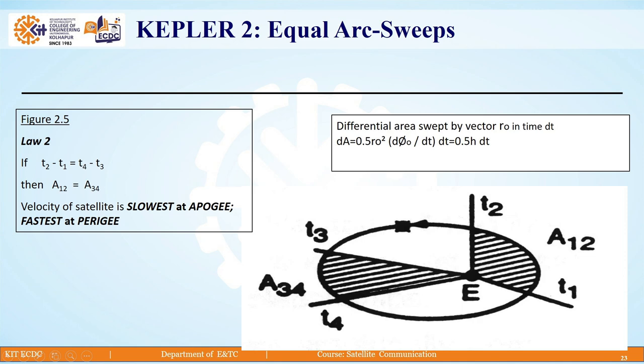The equation for differential area is given: dA = 0.5·r₀²·(dφ₀/dt)·dt = 0.5·H·dt. This is the differential area swept by vector r₀ in time dt.